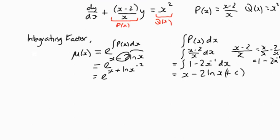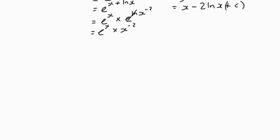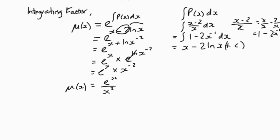There's various ways to simplify this, but this is one of them. Because it's a sum of powers, we can split that up into e to the x multiplied by e to the power log x to the negative 2, which becomes e to the x multiplied by x to the negative 2, because the e and the natural log will cancel—they're inverses of each other. So we end up with e to the x over x squared as our value of μ(x).